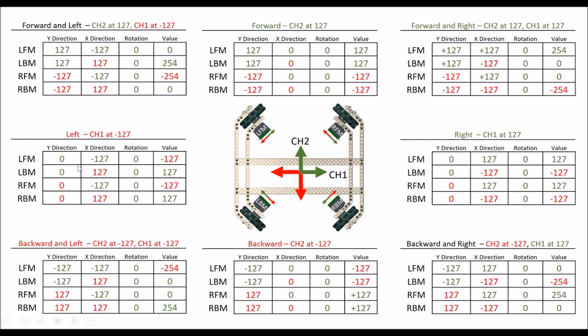Similarly, if I'm going to go left, I take channel 1 to negative 127. I add the true values in the green spaces and the inverse values in the red, and add those together. So my left front motor gets 0 plus negative 127 plus 0, giving negative 127 — counterclockwise. My left back motor adds up to a clockwise rotation, my right front is clockwise, and my right back is clockwise, so the whole robot goes in that direction.